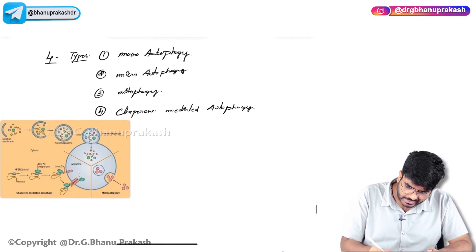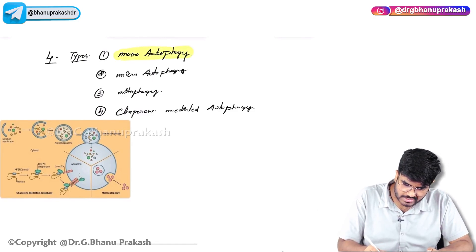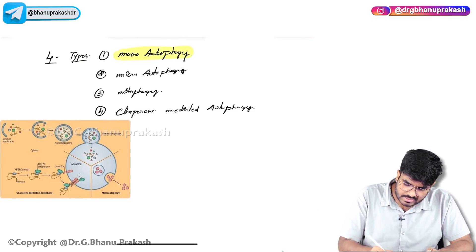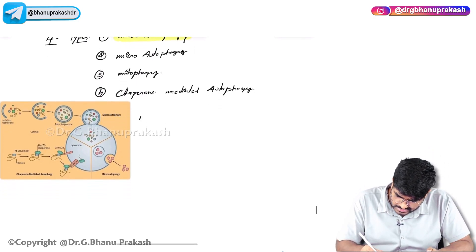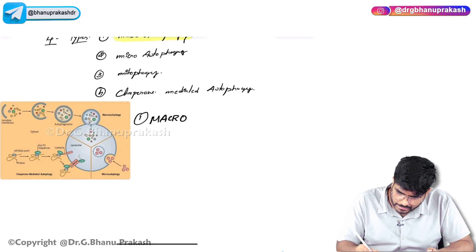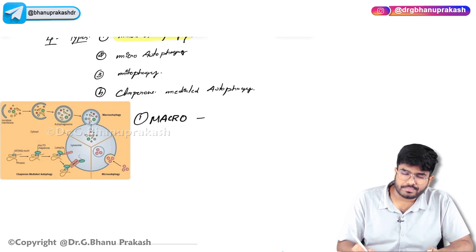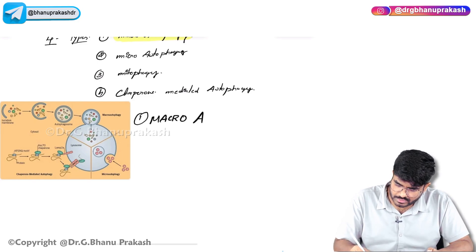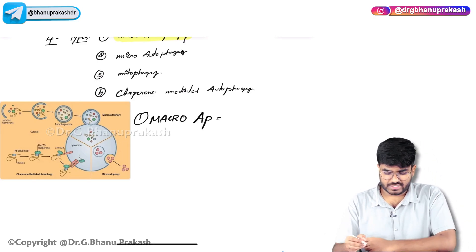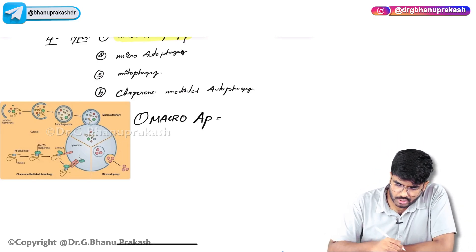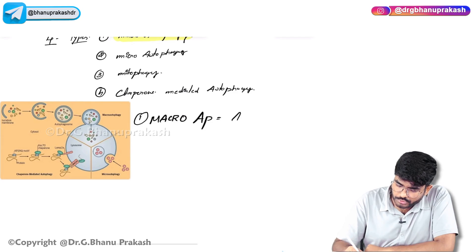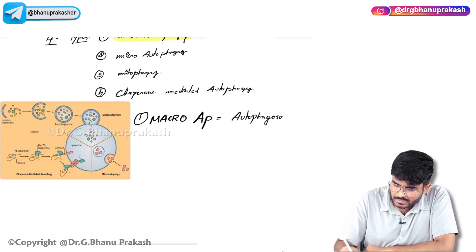First, let's begin with macro autophagy. In macro autophagy, autophagosomes are produced. I'll show you the image for better understanding. In this image, I am showing you macro autophagy. This is the lysosome — the whole structure is the lysosome.